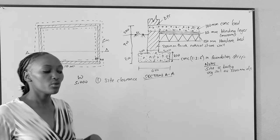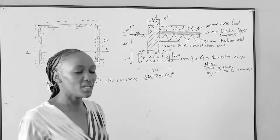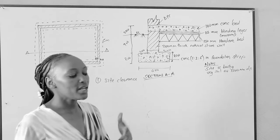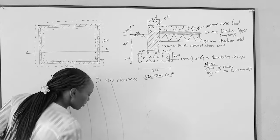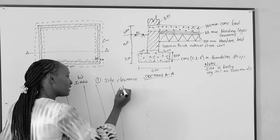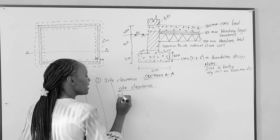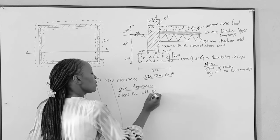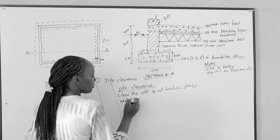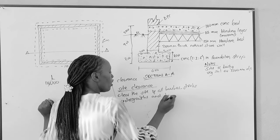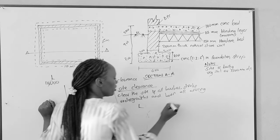All our workings are done in millimeters in the description column. When we go to the dimension column, we use meters. In a taking off sheet we have three columns. When taking off, we write 'site clearance' and under it: clear the site of all bushes, shrubs, undergrowths, and burn all arising. The dimensions are calculated in the description column.